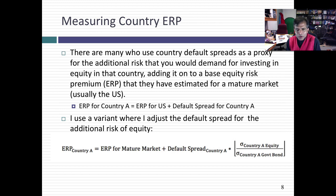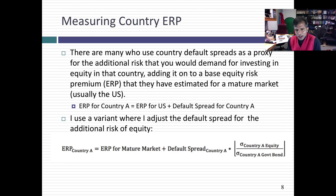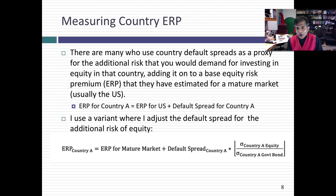So I developed this approach — I wouldn't say derived it, it's really just deep thinking. It's an approximation where I take the default spread for a country and I scale it up for the additional risk of equity in that market. The way I come up with this is I look up two numbers: the standard deviation of the equity index in the market, and the standard deviation of the government bond. For Brazil, you have a 2.63% default spread. If the government bond has a standard deviation of 15% but Brazilian equities have a standard deviation of 30% — twice as risky — then I multiply 2.63% by 2, giving me 5.26%. I add that 5.26% to my mature market premium to get an equity risk premium for Brazil.